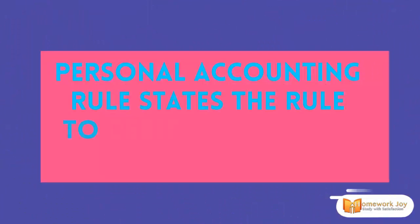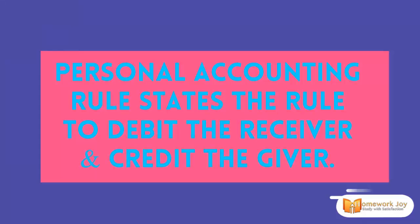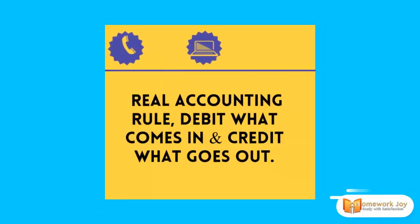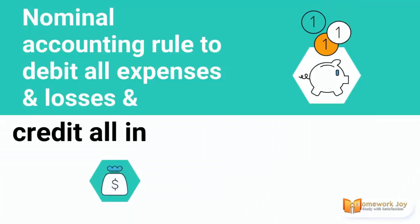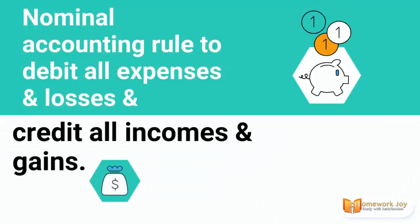Personal Accounting Rule states the rule to debit the receiver and credit the giver. Real Accounting Rule: debit what comes in and credit what goes out. Nominal Accounting Rule: debit all expenses and credit all incomes and gains.